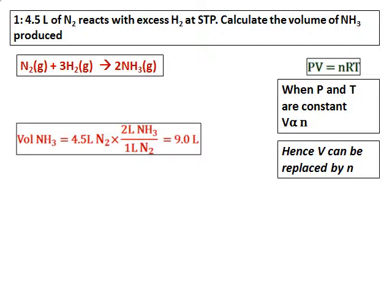In such stoichiometry equations, I can replace volume with number of moles. Based on the equation, the volume of ammonia will be: start with 4.5 liters of nitrogen and convert that into volume of ammonia. Because for every 1 mole of nitrogen I get 2 moles of ammonia, 1 liter of nitrogen gives 2 liters of ammonia. So the volume of ammonia is 9.0 liters.